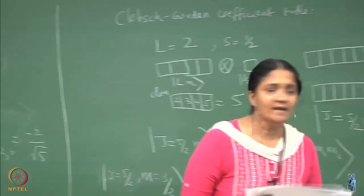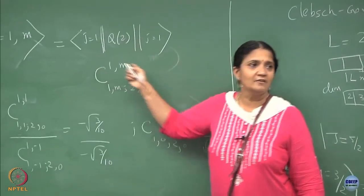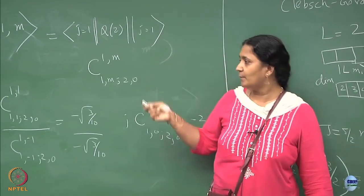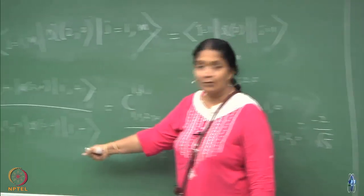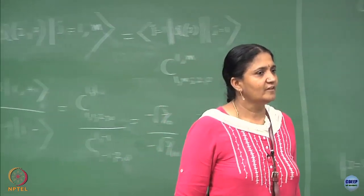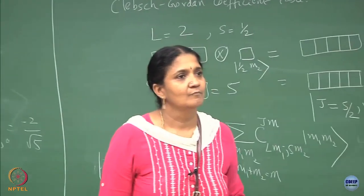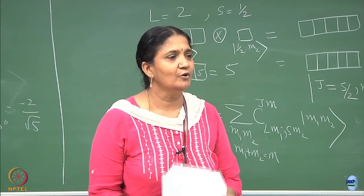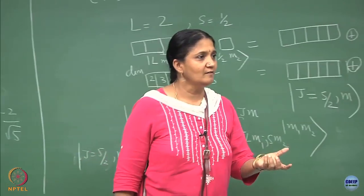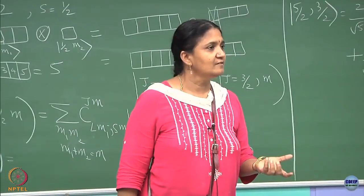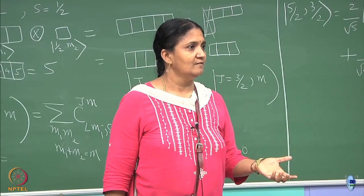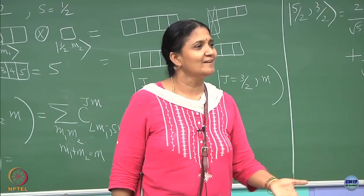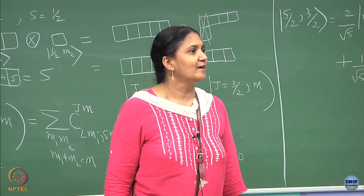Experimentalists — if they give you the result for one orientation, you do not even need the experimentalist to determine the coefficients for the other orientations. The Wigner-Eckart theorem will fix it. If the experimentalist gives Q(2,0) expectation value for a deuteron with m equal to +1, then for the remaining two orientations you do not need the experimental data.